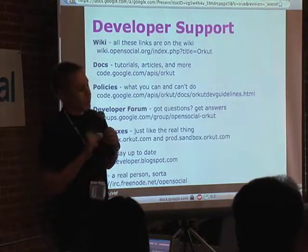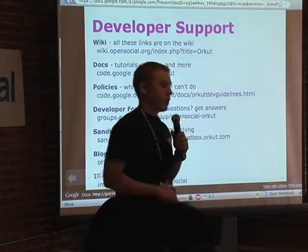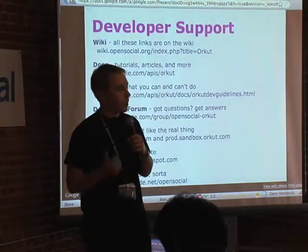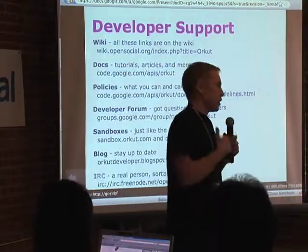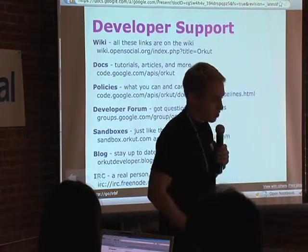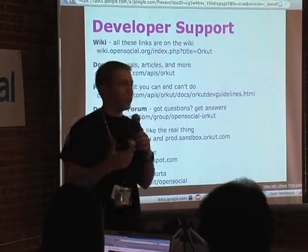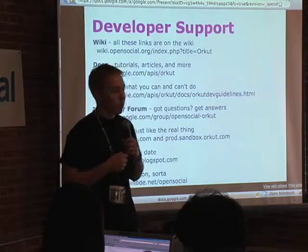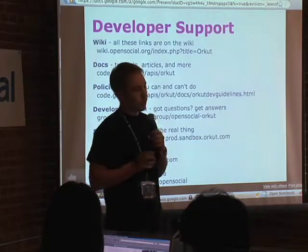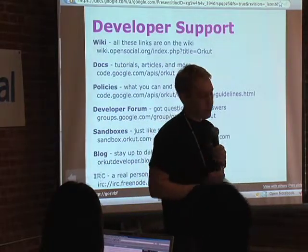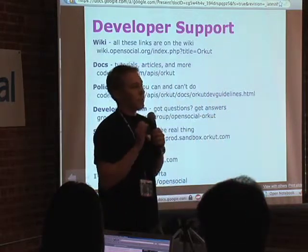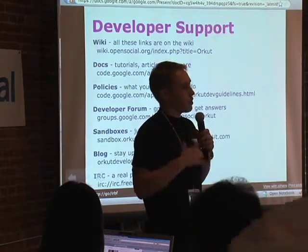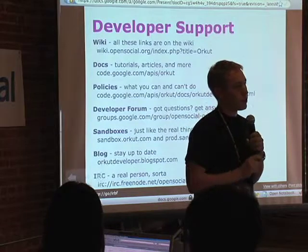Here's a laundry list of links. The most important one is wiki.opensocial.org — on the front page there's a list of containers, and if you click on Orkut you'll see Orkut's page on the wiki with all these links. We've got docs with tutorials and articles to get you running, and the policies covering what you can and can't do. There's a developer forum — today you won't need it, but tomorrow you can post questions there. We have two sandboxes: sandbox.orkut.com is the bleeding edge with the latest JavaScript APIs, and prod.sandbox.orkut.com is an instance of Orkut exactly like production without all the users, so you can test changes before rolling them out.